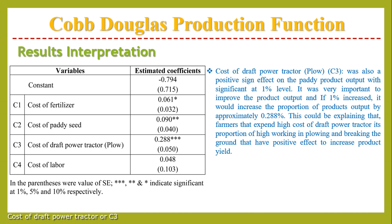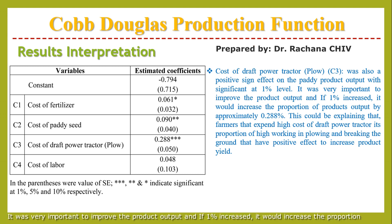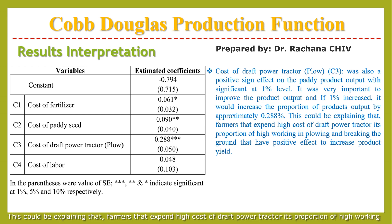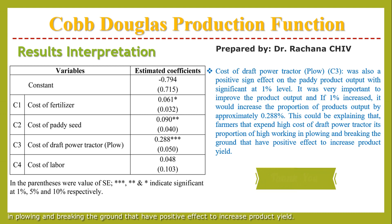Cost of draft power tractor, or C3, was also a positive sign effect on the paddy product output. If there is a 1% increase, it would increase the proportion of product output by approximately 0.20%. This explains that a farmer who expends high cost on tractor structure — its proportions or high workload in plowing and breaking the ground — has positive effects to increase production.